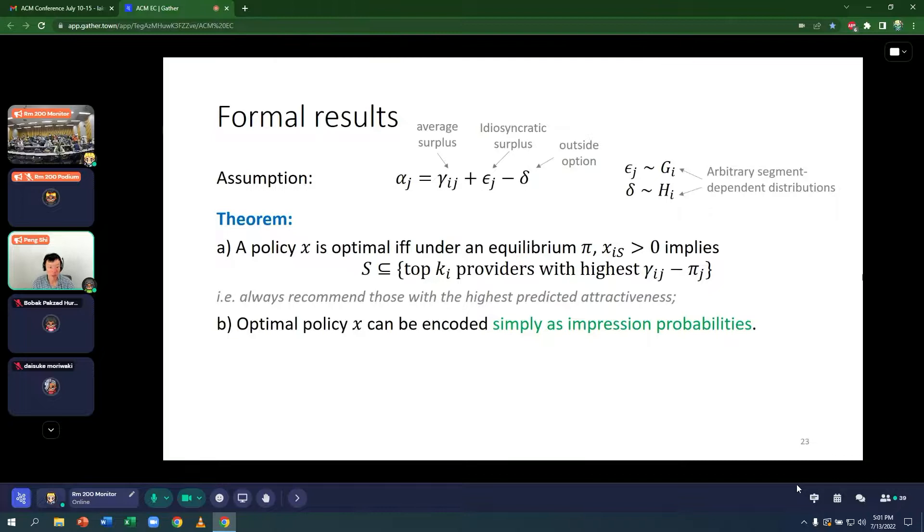Secondly, an optimal policy can be encoded simply as impression probabilities, meaning that we only care about the frequency that each provider is recommended to each segment of customers, but not which subsets are recommended at the same time. And this is due to, again, at equilibrium, these profits exactly counteract these differences in gammas so that there's a lot of symmetry.